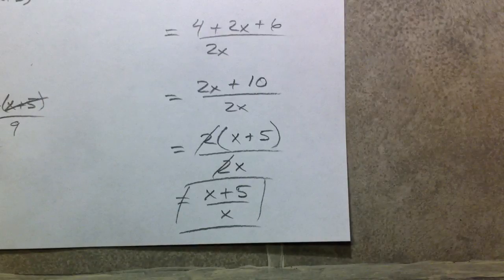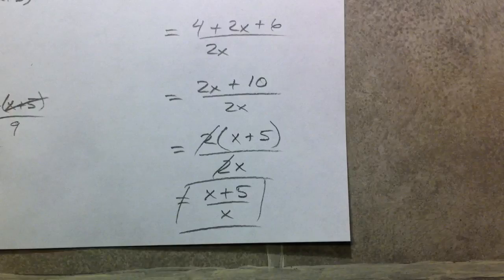And then 2x cancel out the common factor of 2, and you're left with x plus 5 over x. And that wraps it up. So 2 methods you can do there. Use either or. I don't care.